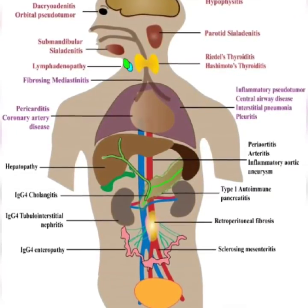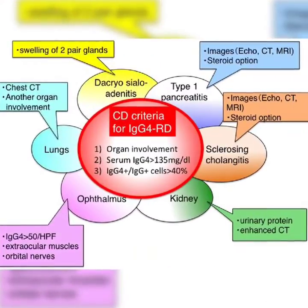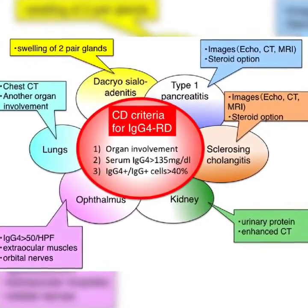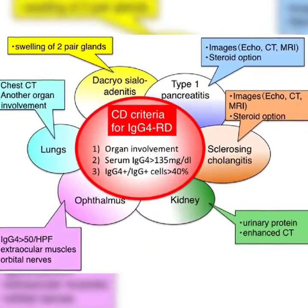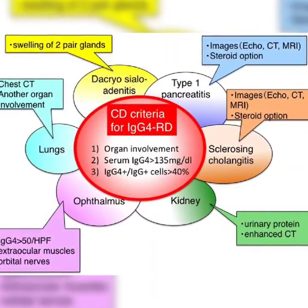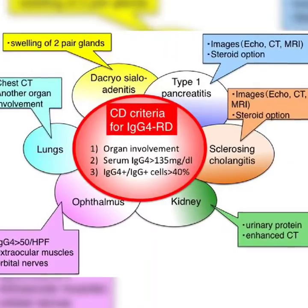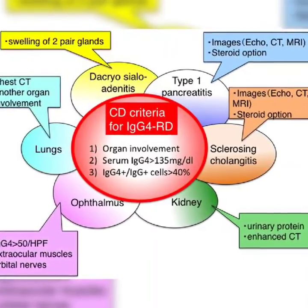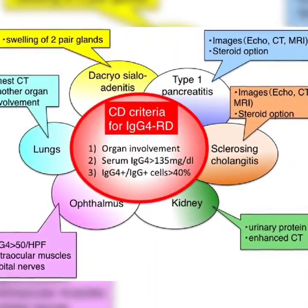Increasing evidence suggests that IgG4-related disease is an autoimmune condition, much like rheumatoid arthritis and systemic lupus erythematosus.